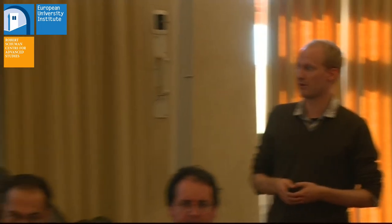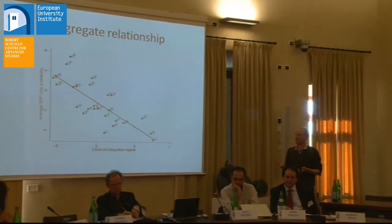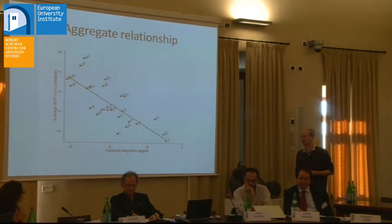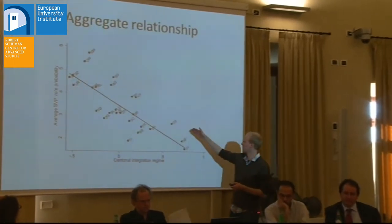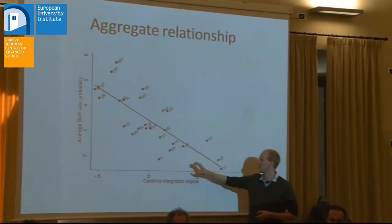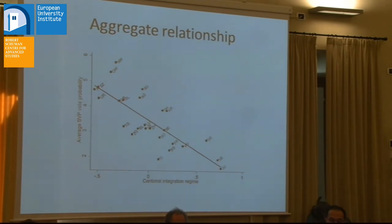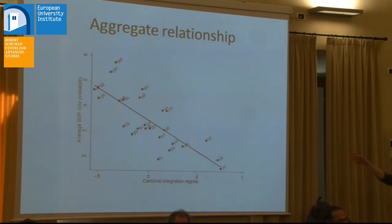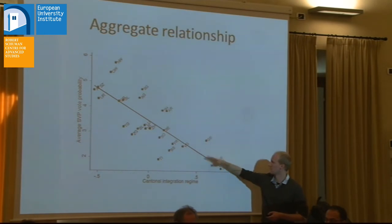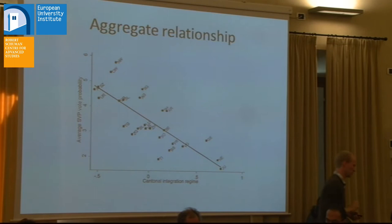The aggregate relationships look very nice — a very negative relationship between the inclusiveness of an integration regime and the vote share received by the Swiss People's Party, with the French-speaking cantons in the lower right. Ticino is an exception because they have their own partially anti-immigrant party. If we combined the voting propensities of both that party and the Swiss People's Party, Ticino would move up toward the fitted line; we'd have to do the same for Geneva, which is also a bit of an outlier among French-speaking cantons. The relationship remains absolutely significant.